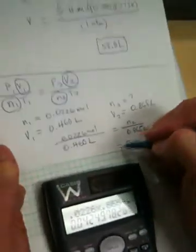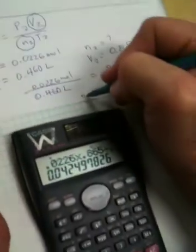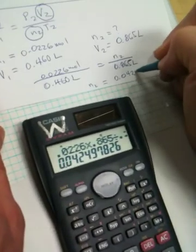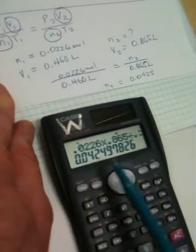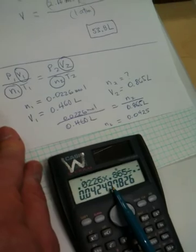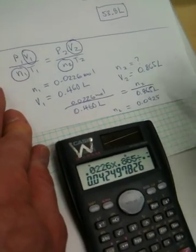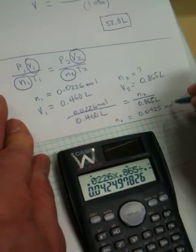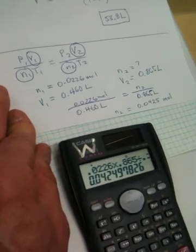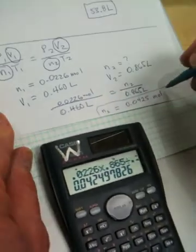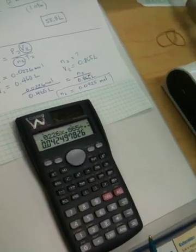So this is all going to be equal to our N2 is going to be equal to 0.0425 when we round. As we're rounding, this is our first sig fig, second, third sig fig. So the 9 is going to round the 4 up to 5. And this is going to be in moles. Because N always has to be in moles. And that is our solution. That's the end of our second video.